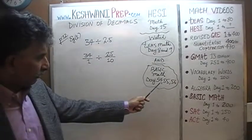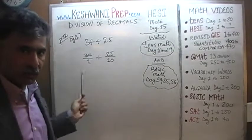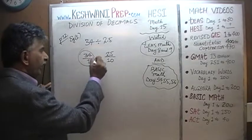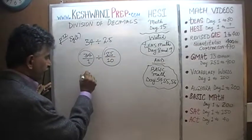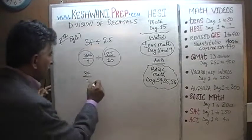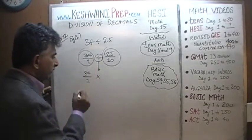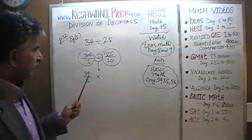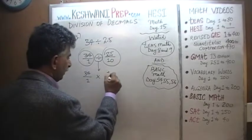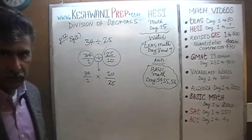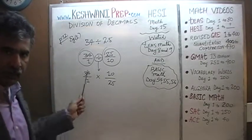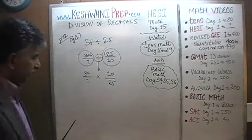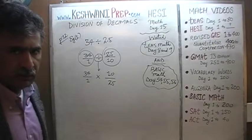Another thing that we learned in those videos — days 54, 55, 56, and 8 and 9 — which I am not going to repeat everything here, is that when we have to divide one fraction by another fraction, we take the first fraction and multiply it by the reciprocal of the second fraction. The division becomes multiplication. So 25 over 10 becomes 10 over 25. We are almost done — now we are ready to start reducing things.